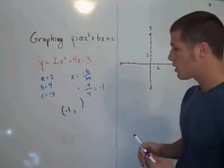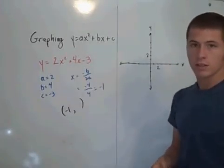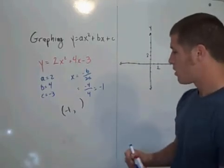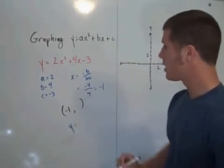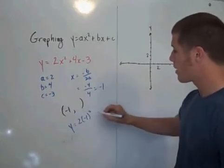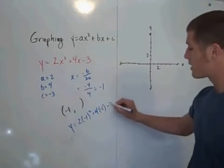To find the y value, you just plug negative 1 into your equation to get y. So you have y equal to 2 times negative 1 squared plus 4 times negative 1 minus 3.